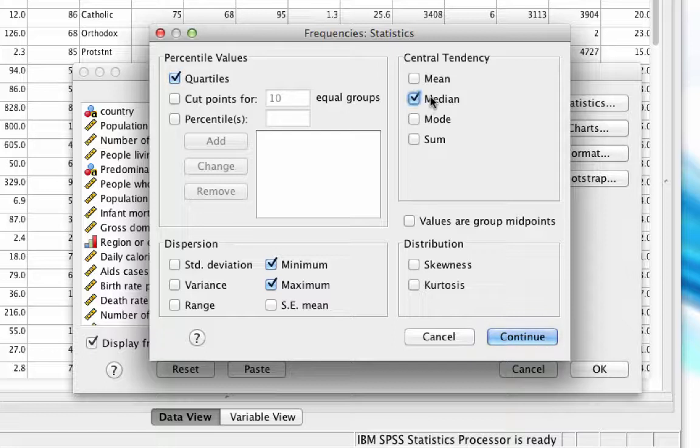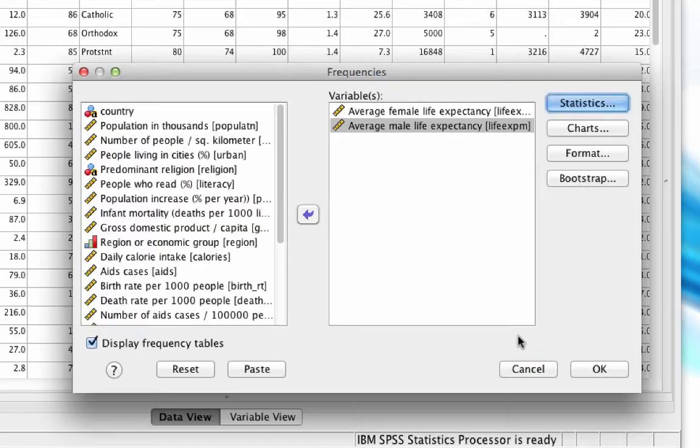Actually, we don't need to choose the median. It is the same as quartile two, but I want to prove that to you. So click continue. Now unclick display frequency tables and click OK.